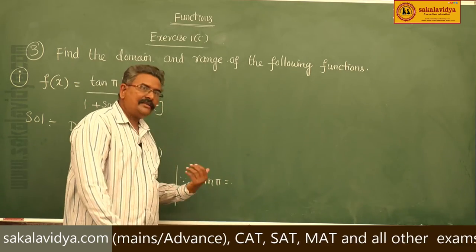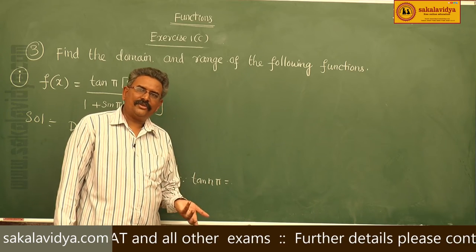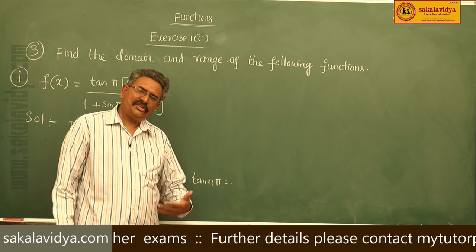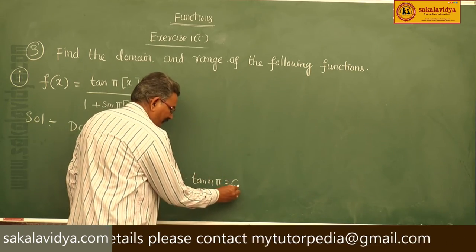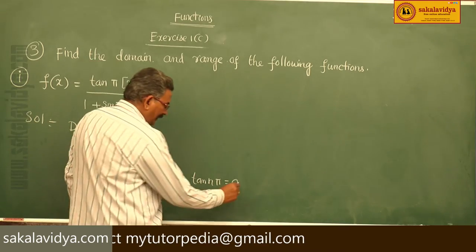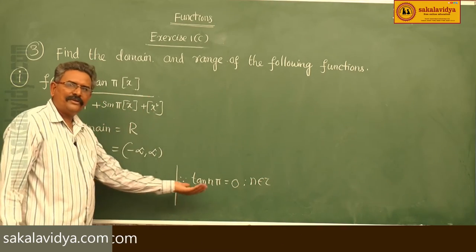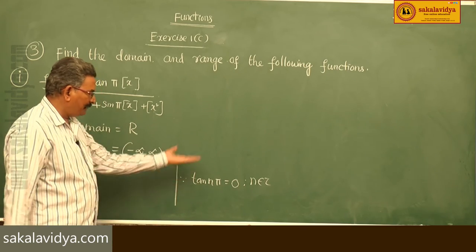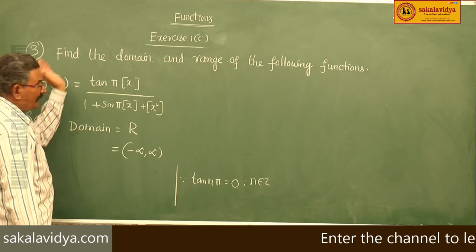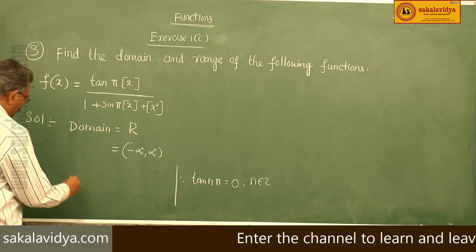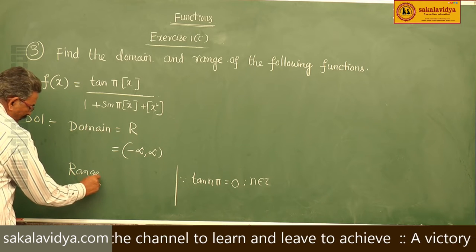If you take n = 1, tan(π) = 0; tan(2π) = 0; tan(3π) = 0. So tan(nπ) is always 0 for every n belonging to the integers ℤ, whether positive or negative. That means f(x) is always 0, and the range equals {0}.